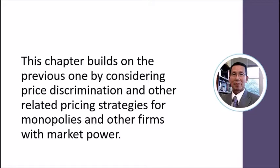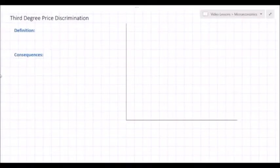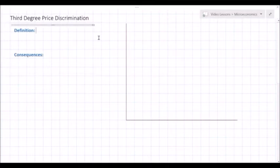This chapter builds on the previous one by considering price discrimination and other related pricing strategies for monopolies and other firms with market power. I'm going to talk about third-degree price discrimination, which is another very common form. In earlier lessons we've already talked about first and second degree price discrimination, so you may want to make sure you've watched those videos before you complete today's lesson.